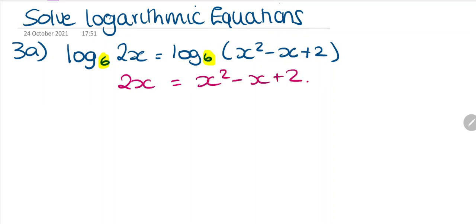Now we're going to take all our terms on one side and make it equal to 0. I'm going to minus 2x on both sides, so this is 0, and then we'll have x squared minus 3x plus 2.